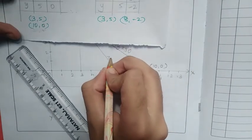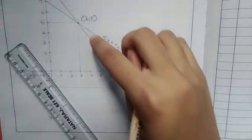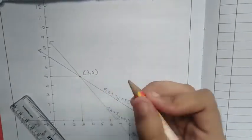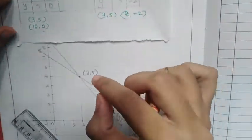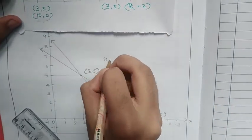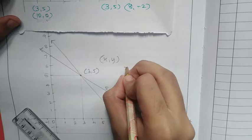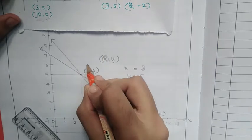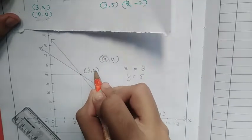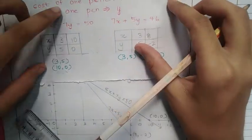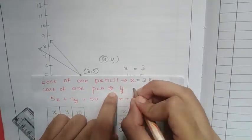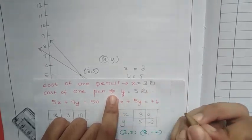The second equation is 7x plus 5y equals 46. The two lines intersect at the point (3, 5). So x-coordinate equals 3 and y-coordinate equals 5. Therefore, the cost of one pencil is Rs. 3 and the cost of one pen is Rs. 5.